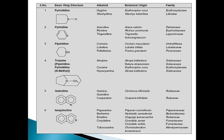The fifth class of alkaloids is quinoline. Examples are quinine and quinidine. These are obtained from Cinchona. Cinchona officinalis is the botanical origin, and the family is Rubiaceae.